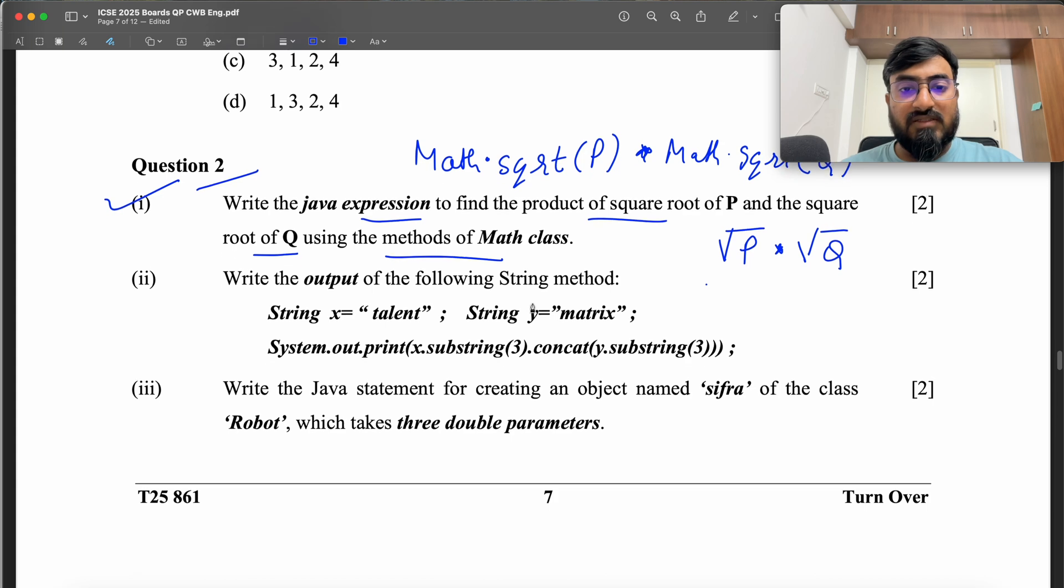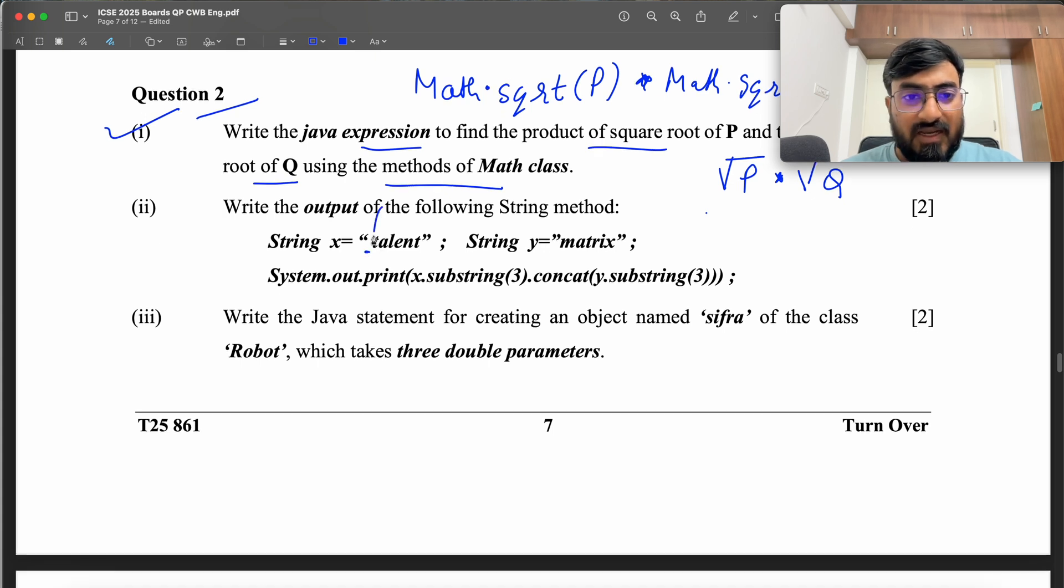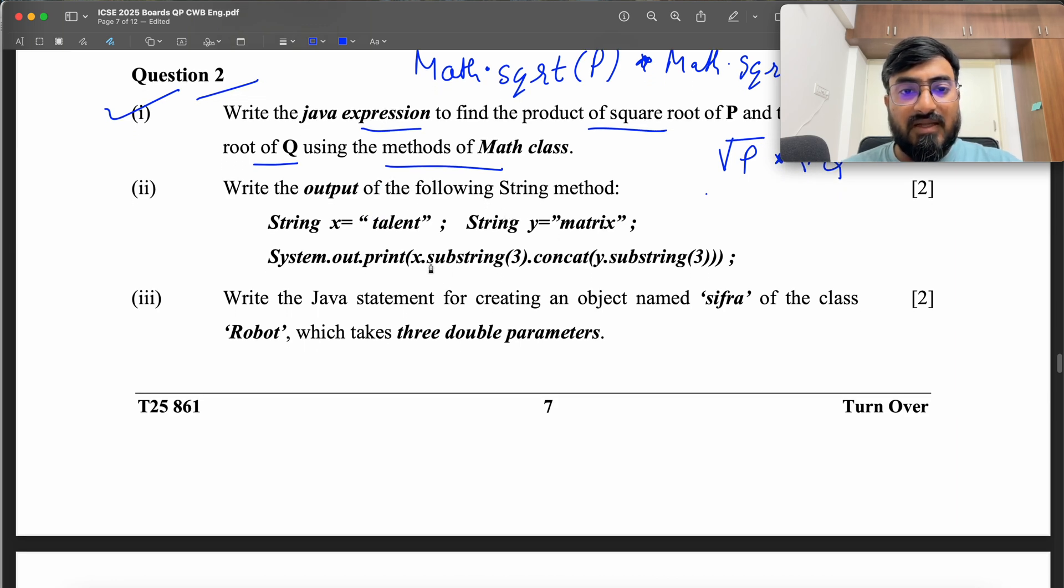Write the output of the following String method. String x equals talent, String y equals matrix. Now this is very confusing. I don't think there's a space here. Assuming there is no space here, so output of the following string method, x.substring(3). So this is 0, 1, 2, 3. So it has to start with E. This is going to be E and T.